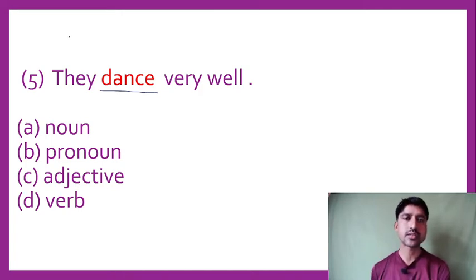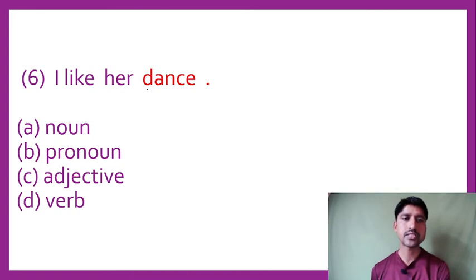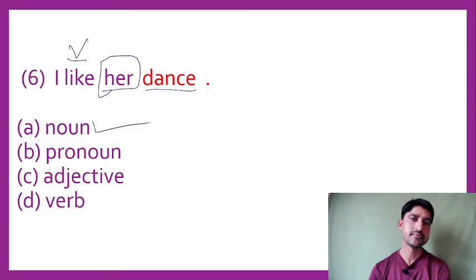The basic structure is subject and object. When we are using the verb: we are going to dance - then 'dance' here is a verb. Next: I like her dance. Here 'dance' is a noun. I like her dance - here 'dance' functions as a noun.